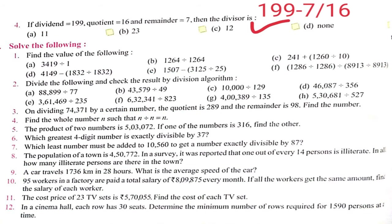Question number 4: if dividend = 199, quotient = 16, and remainder = 7, then the divisor is? We put these values into the formula. Our answer is (199 − 7) ÷ 16 = 12. Option C is correct.